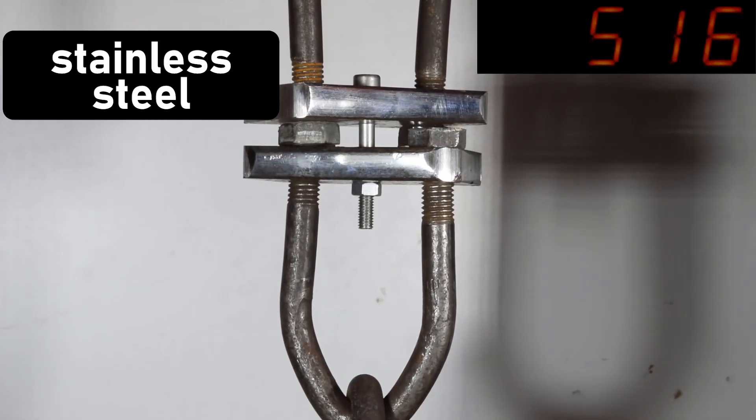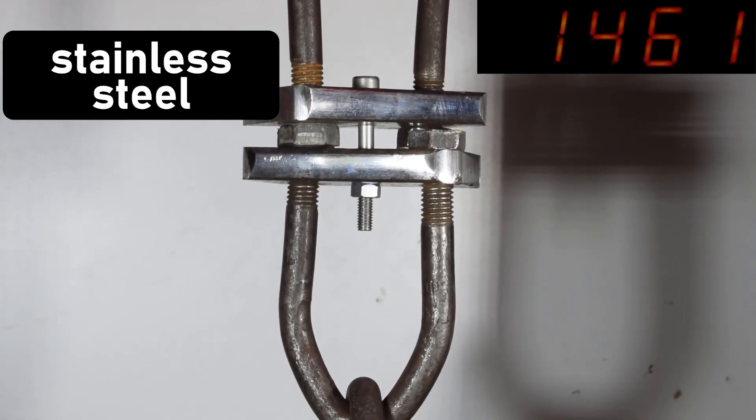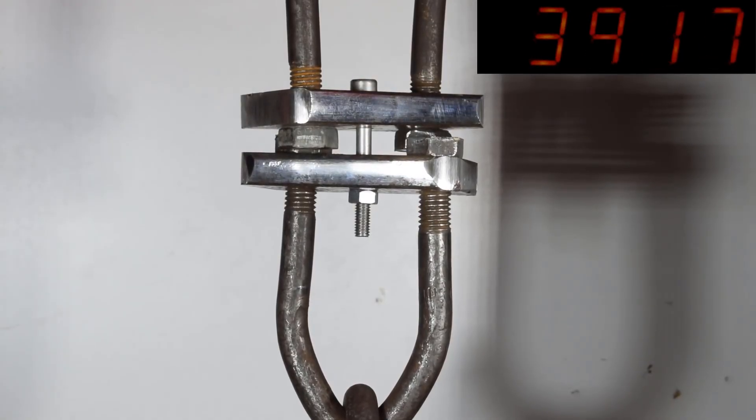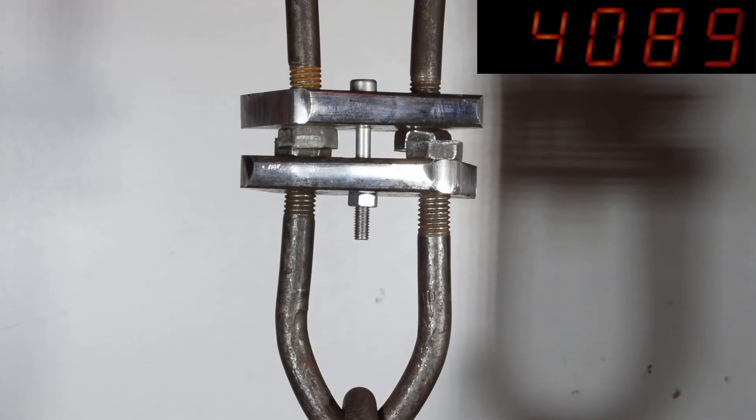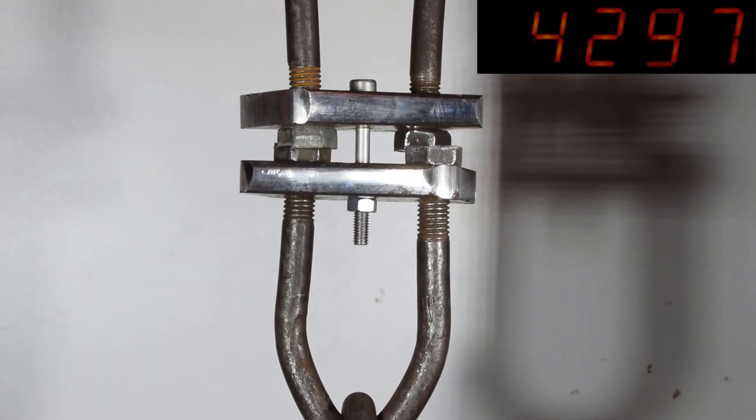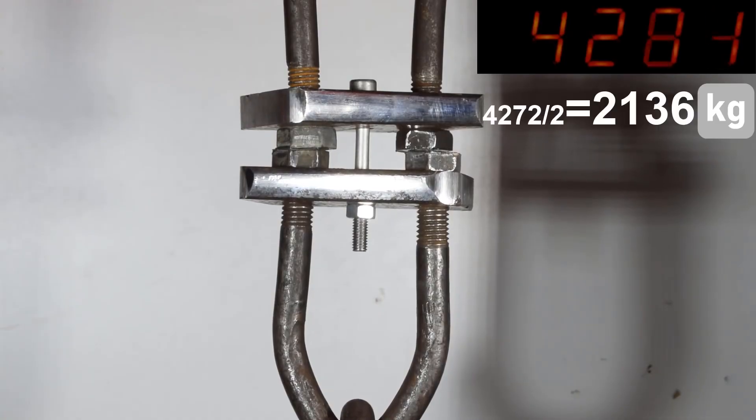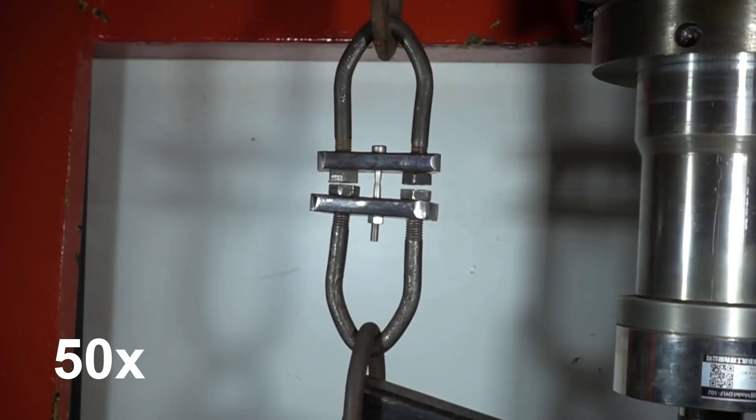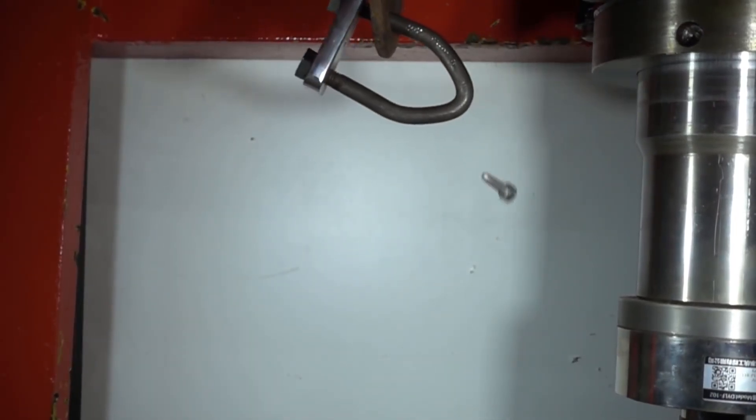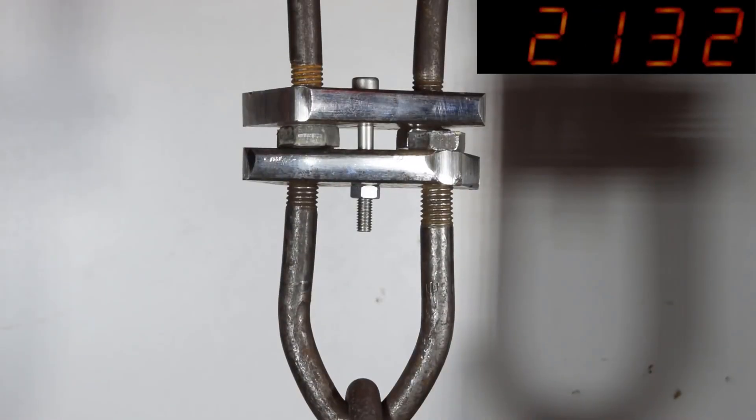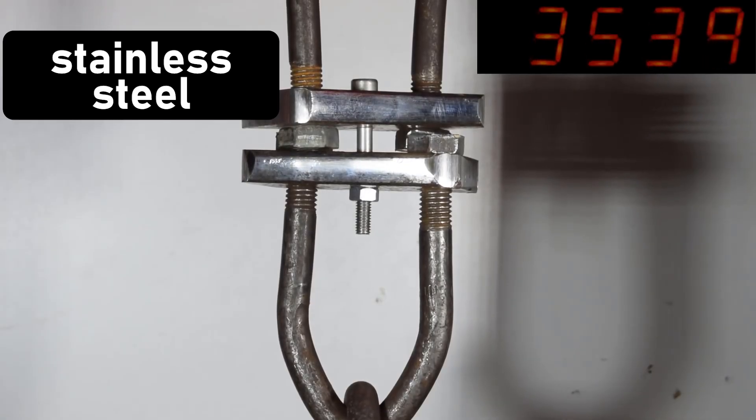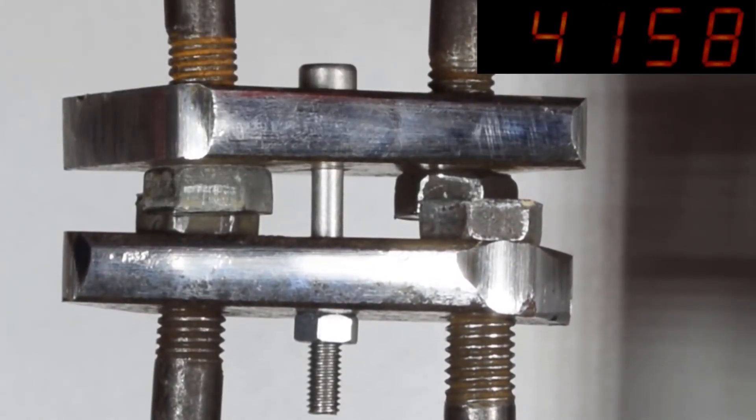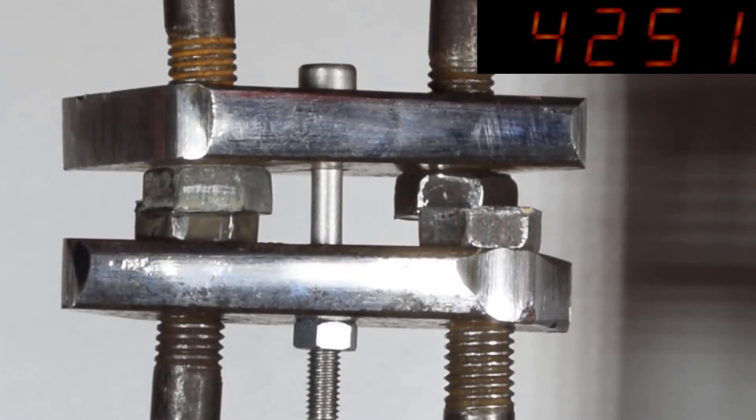Next up is the stainless steel bolt. The stainless steel held up under tension just over 2 tons, which again falls slightly short of the load the carbon steel bolt withstood. In slow motion you can see how much the stainless steel bolt stretched before it tore apart. It stretched almost a centimeter.